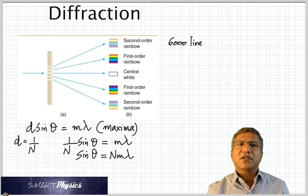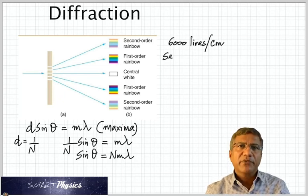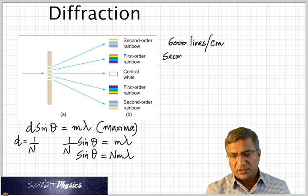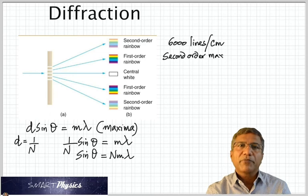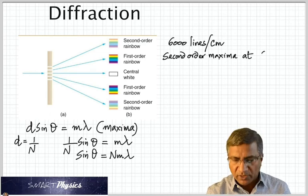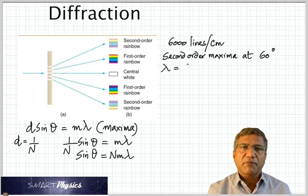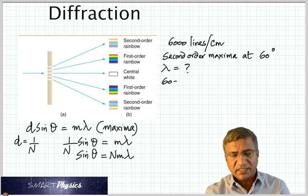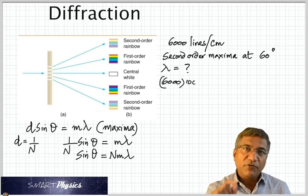So let's assume that there are 6,000 lines per centimeter. And you're asked to find... You're given that the second order maxima is produced at 60 degrees. And you have to find the wavelength. So first of all, 6,000 lines per centimeter is how many lines per meter? It's 6,000 multiplied by 100. Because there are 100 centimeters in a meter. So you get that as N, which is 6 times 10 to the 5 lines per meter.